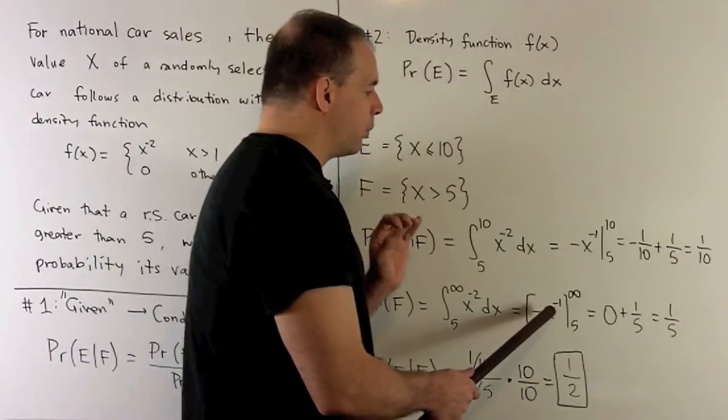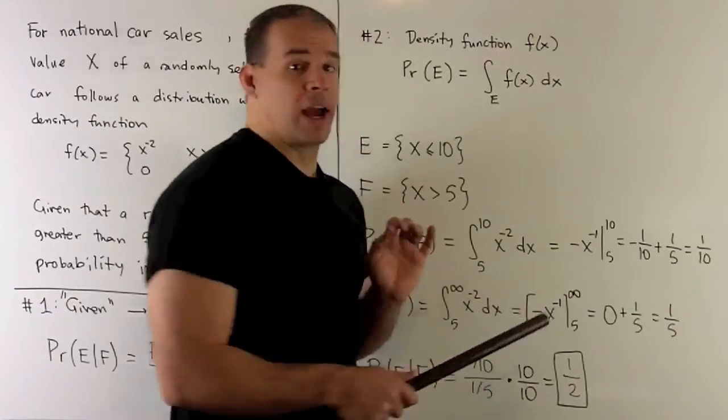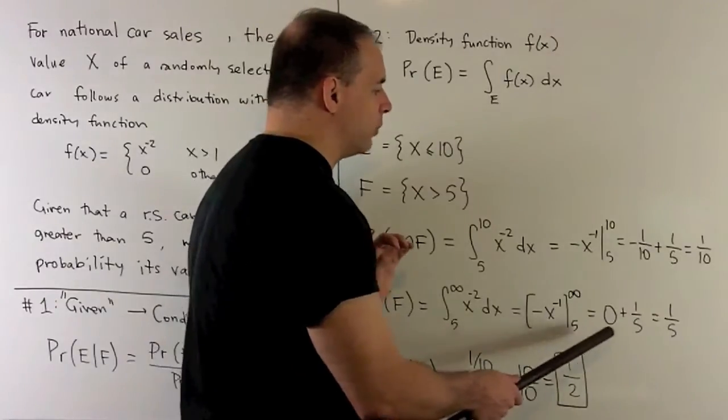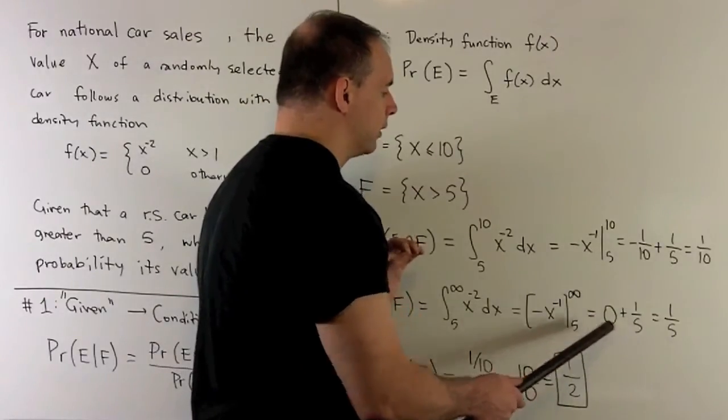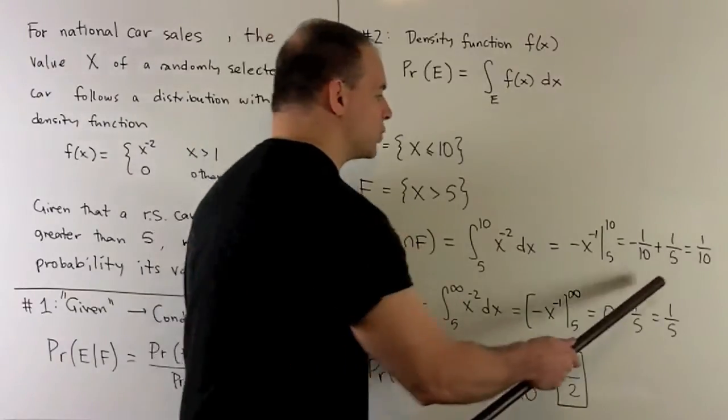And then we'll note, if I take this limit here as x goes to infinity, 1 over x goes to 0. So I get a 0 here. Then if we put a 5 in, we're gonna get a 1 fifth. So it'll be minus and minus 1 fifth. So probability of F is 1 fifth.